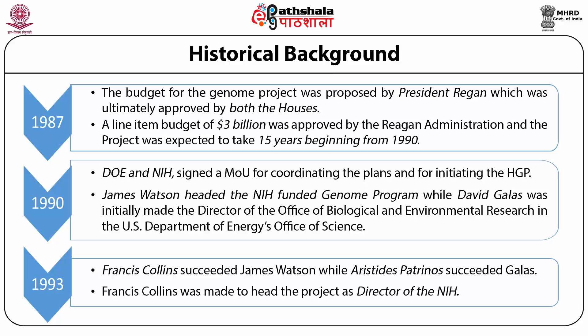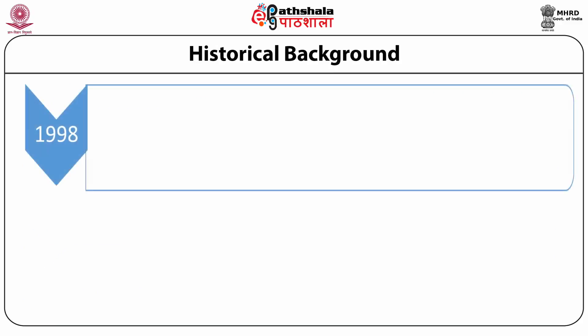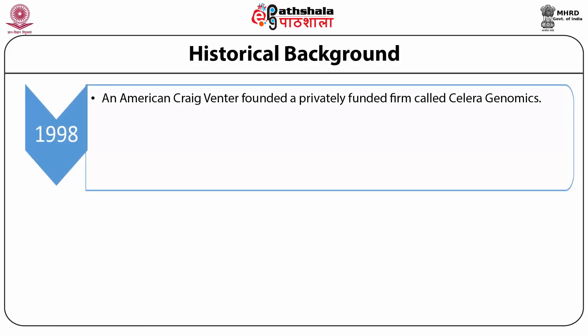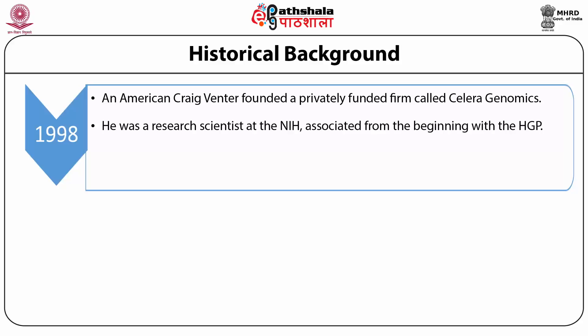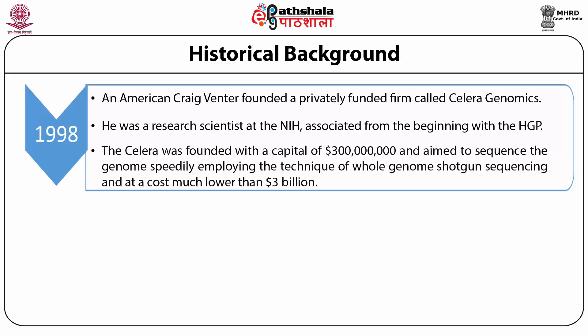Francis Collins was made to head the project as director of the NIH. In 1998, an American, Craig Venter, founded a privately-funded firm called Celera Genomics. He was a research scientist at the NIH associated from the beginning with the HGP. Celera was founded with a capital of $3 million and aimed to sequence the genome speedily, employing whole genome shotgun sequencing at a cost much lower than $3 billion.